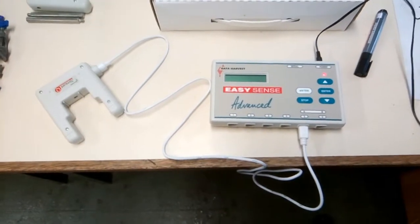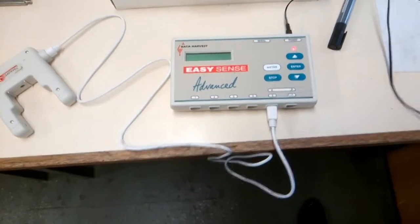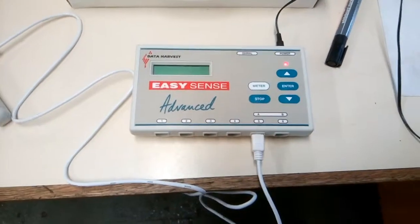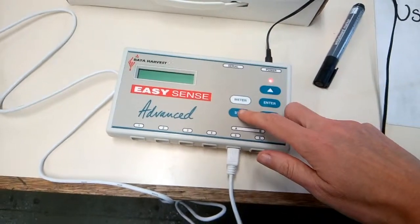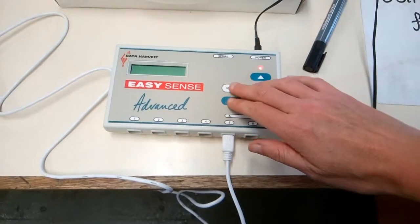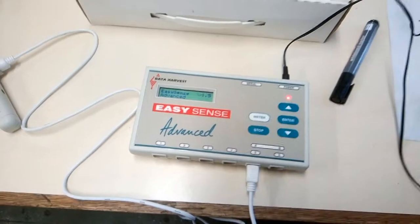Now you've got that plugged in, here's the difficult bit. The first bit that people struggle with with these data loggers is how do you turn them on. To turn them on, you see all the buttons here? There's three that have got writing on: meter, enter, and stop. Press all of those three ones at once, and when you release it, it comes on.